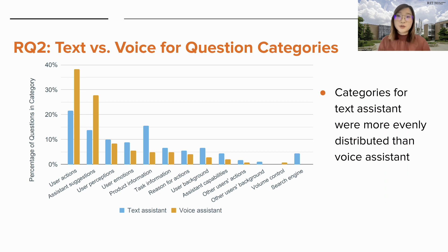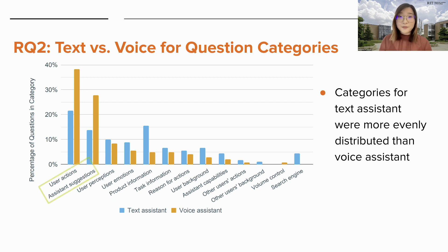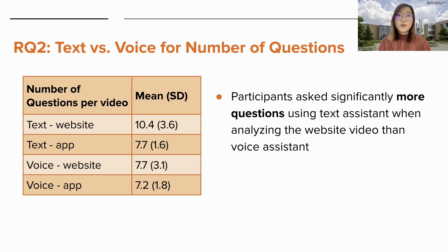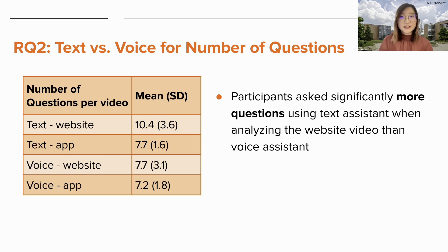This figure shows the percentage of questions in each subcategory, separated by text or voice assistant. The categories for the text assistant were more evenly distributed throughout the subcategories. However, user actions and assistant suggestions were the most common for both modalities. Participants also asked significantly more questions using the text assistant when analyzing the website video than the voice assistant, which could be related to perceived efficiency.